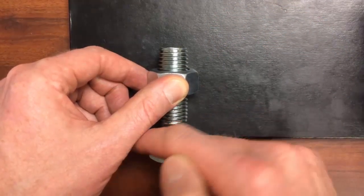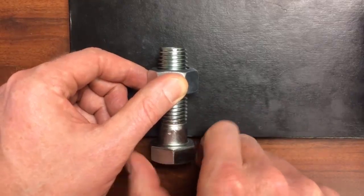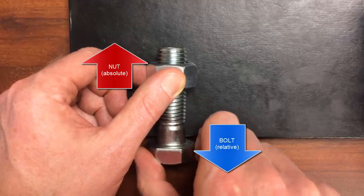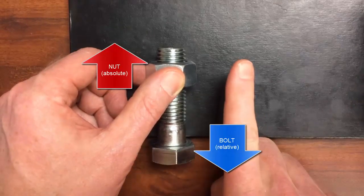Now if I turn in the opposite direction—up over the top or lefty-loosey—we'll see the nut goes in the opposite direction and actually goes then toward the other end of the bolt. So it's traveling upwards.